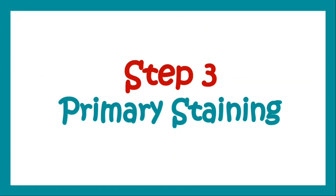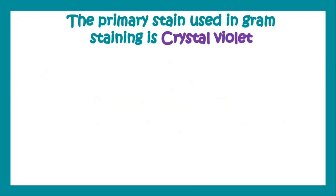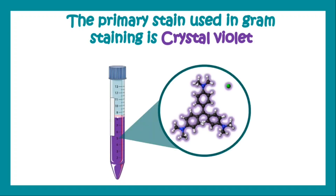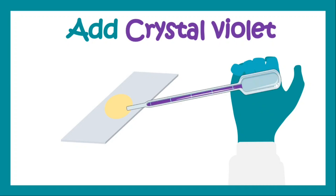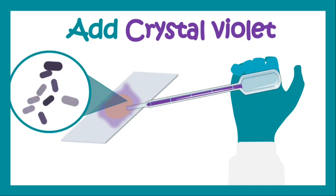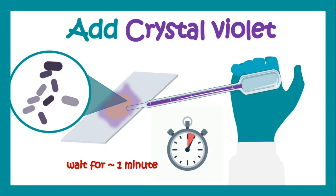Then we go for step three, that is primary staining — the use of crystal violet. Crystal violet is the stain used by Gram and hence known as Gram's violet or gentian violet. We add the crystal violet on the smear, which causes staining of the microbes.